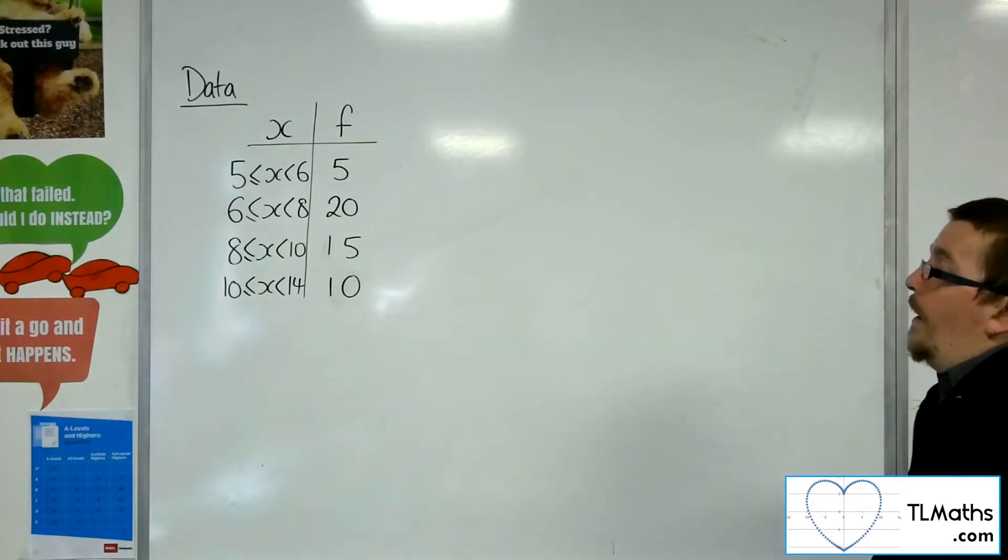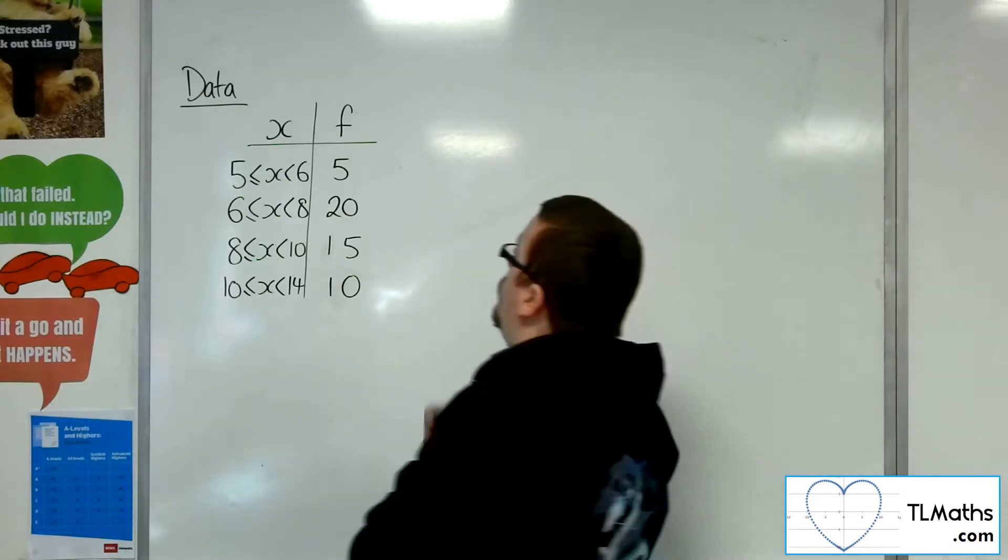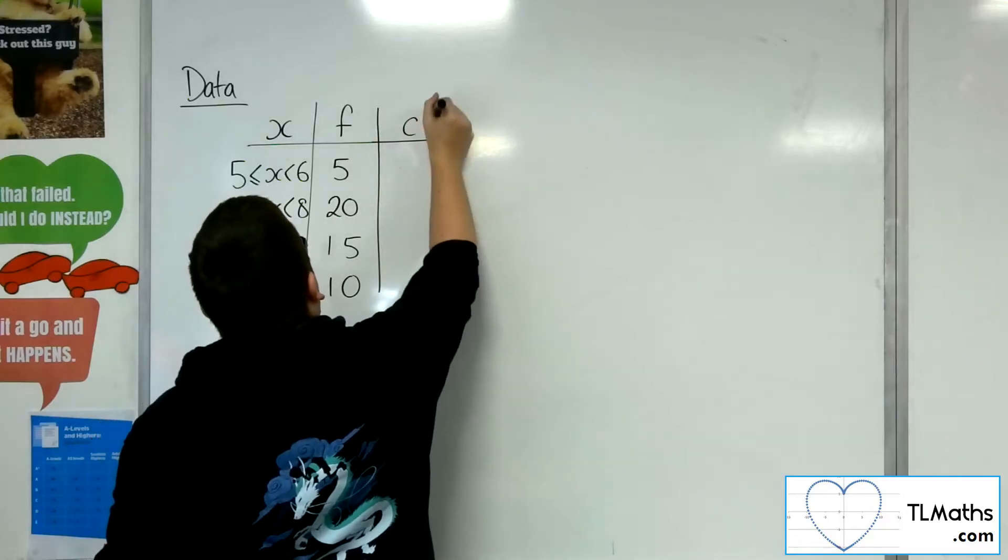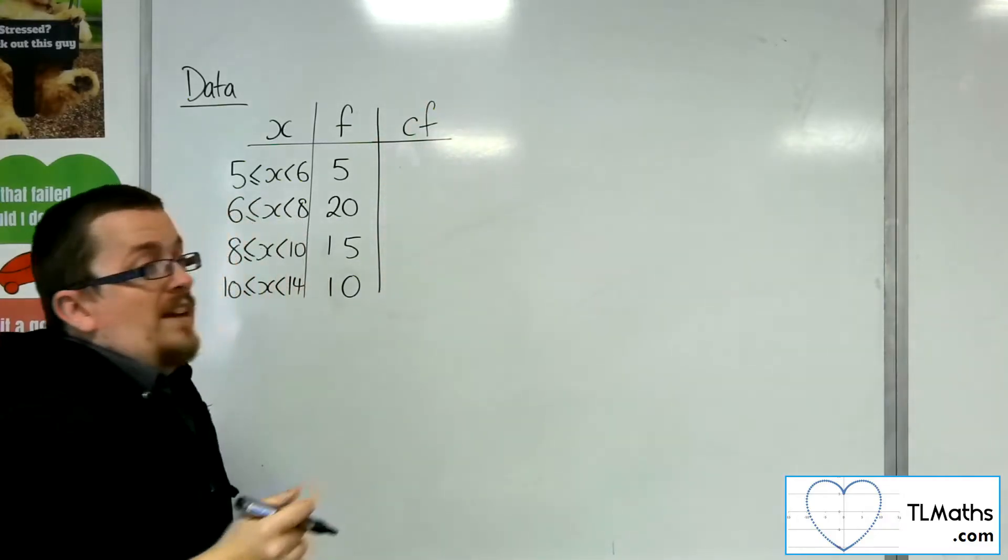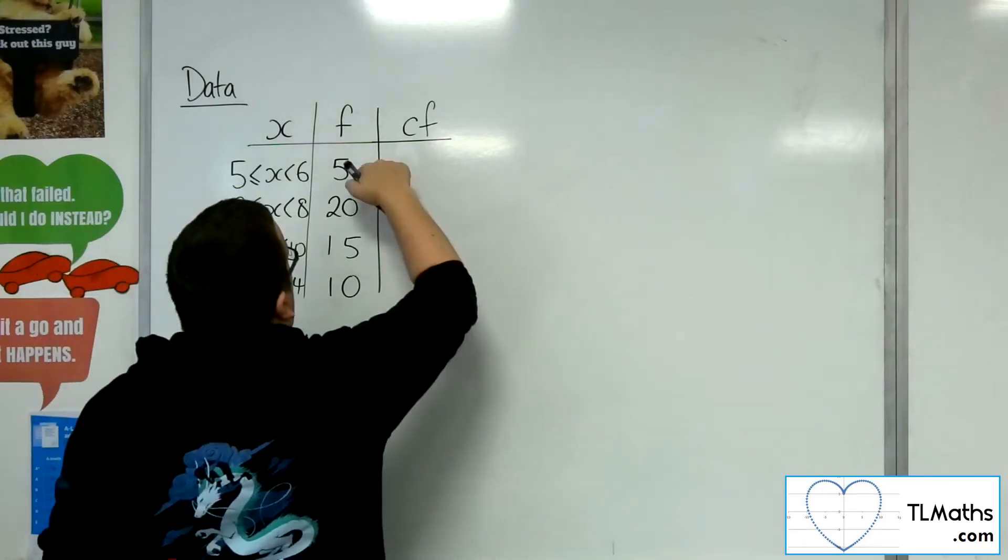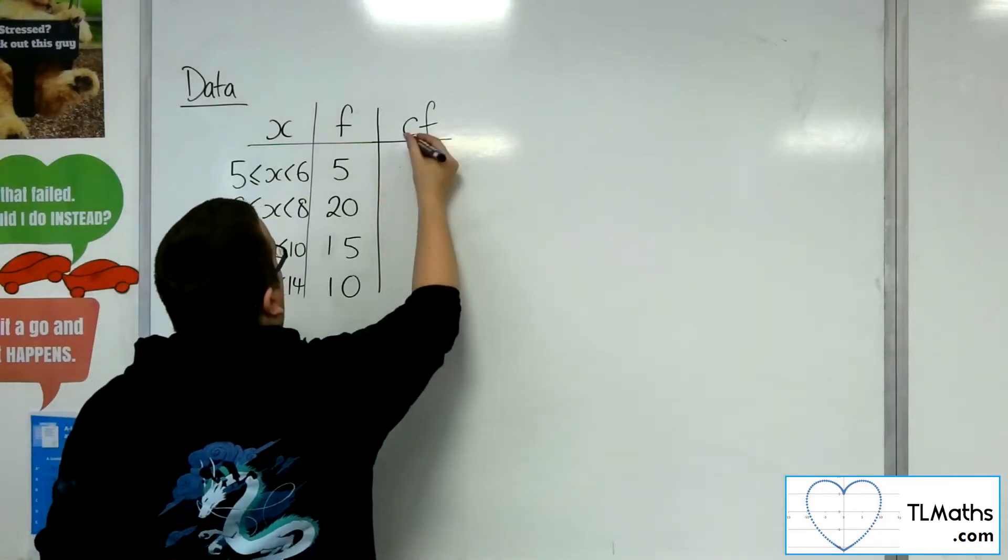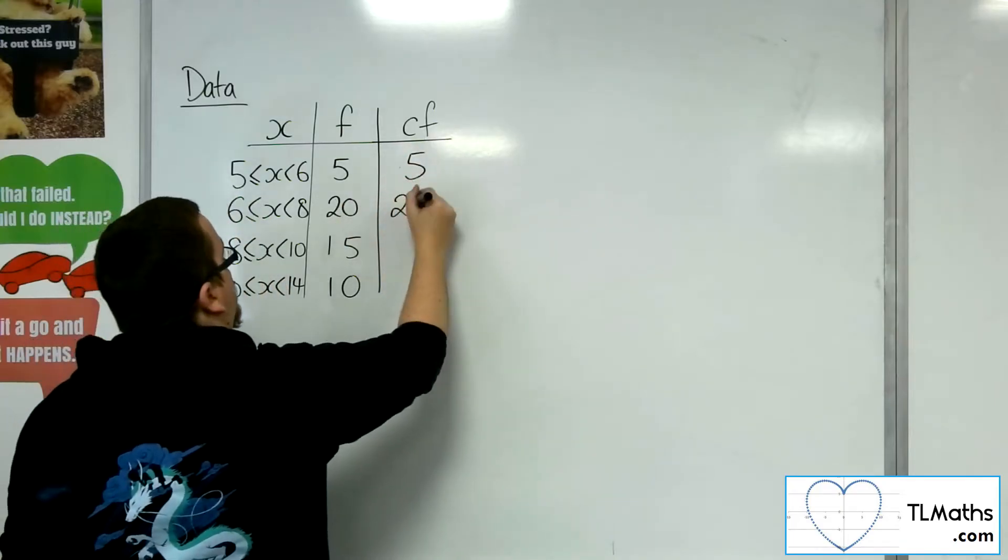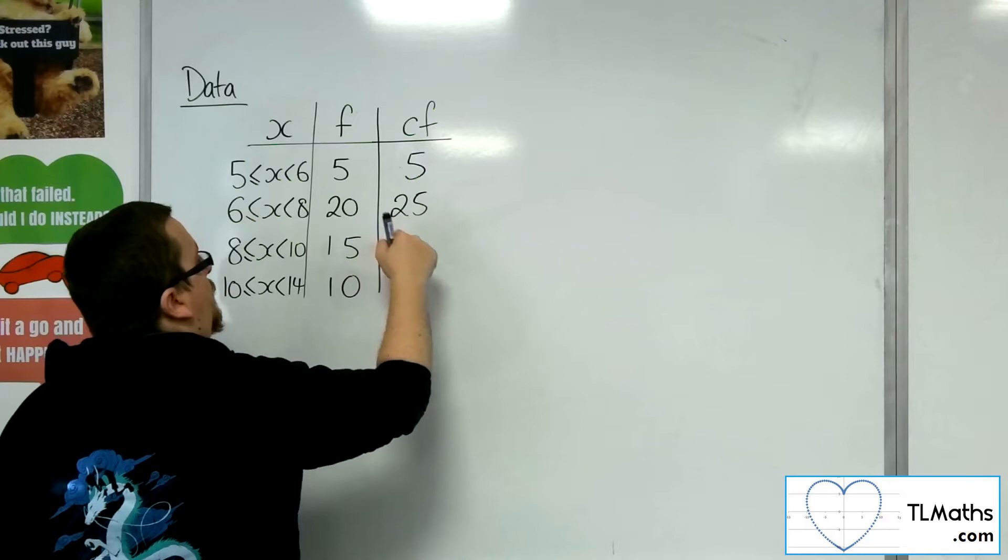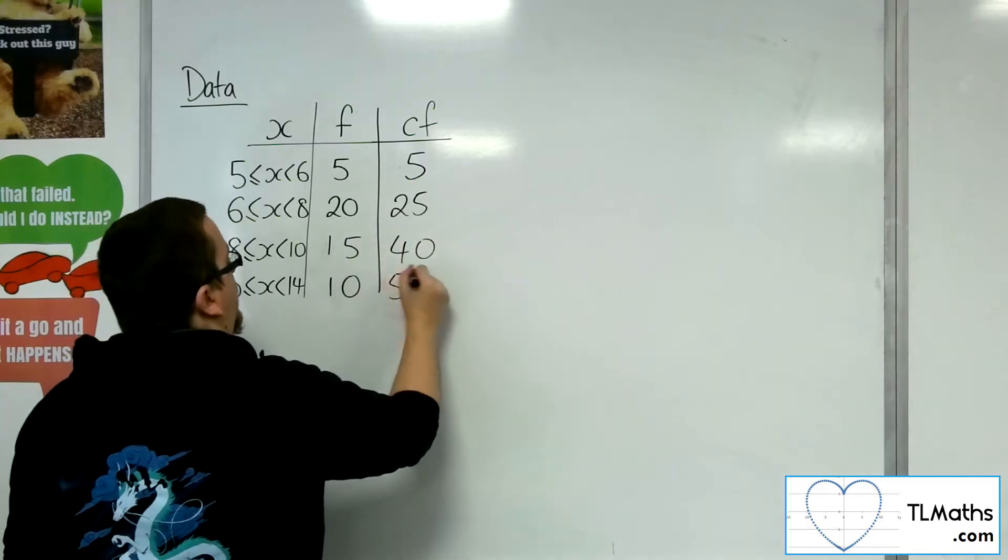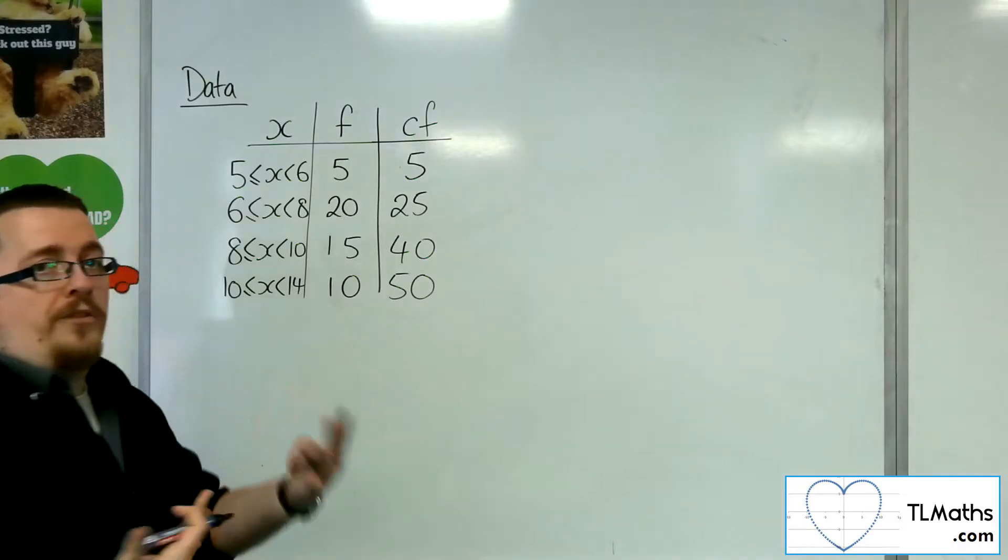And the way that this works is that we look at the cumulative frequency, and that just means that we add up the frequencies as we go. So, the initial frequency is 5, and then I add on 20, which gets me to 25, and then I add on 15, which gets me to 40, and then I add on 10, which gets me to 50. So, it adds up the frequency as you go along.